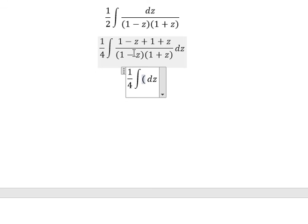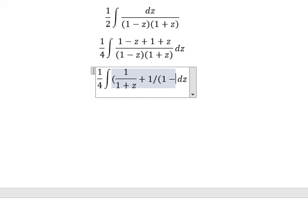1 minus z divide 1 minus z, you will get about 1 over 1 plus z. 1 plus z simplify with 1 plus z, you will get about 1 over 1 minus z.